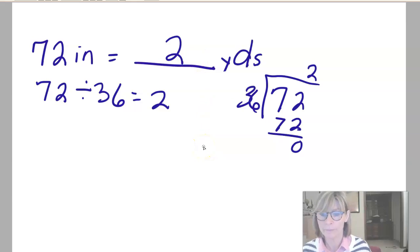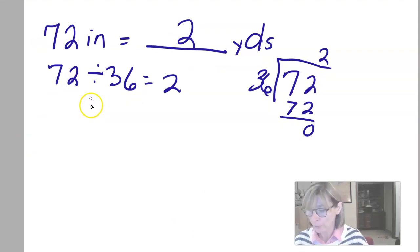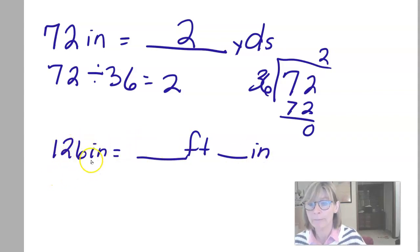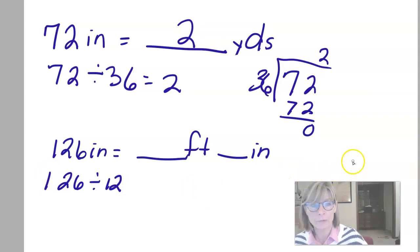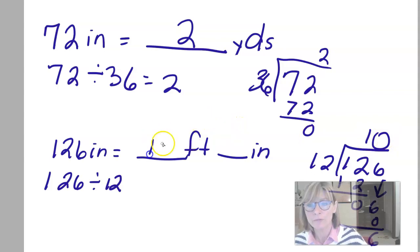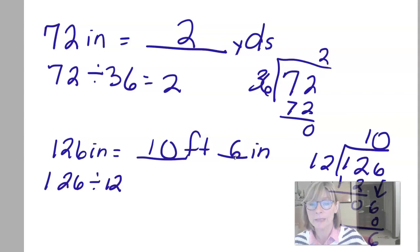They don't always work out evenly, so let's try one like that. We're going to start with 126 inches and change that into feet and inches, because there's going to be some left over. I'm going from a smaller to a larger unit, so I'm going to be dividing: 126 inches divided by 12. Doing the long division: 12 goes into 12 once, bring down the 6, 12 goes into 6 zero times with 6 left over. So it goes in 10 feet, with 6 inches left over — that is equal to 10 feet, 6 inches.